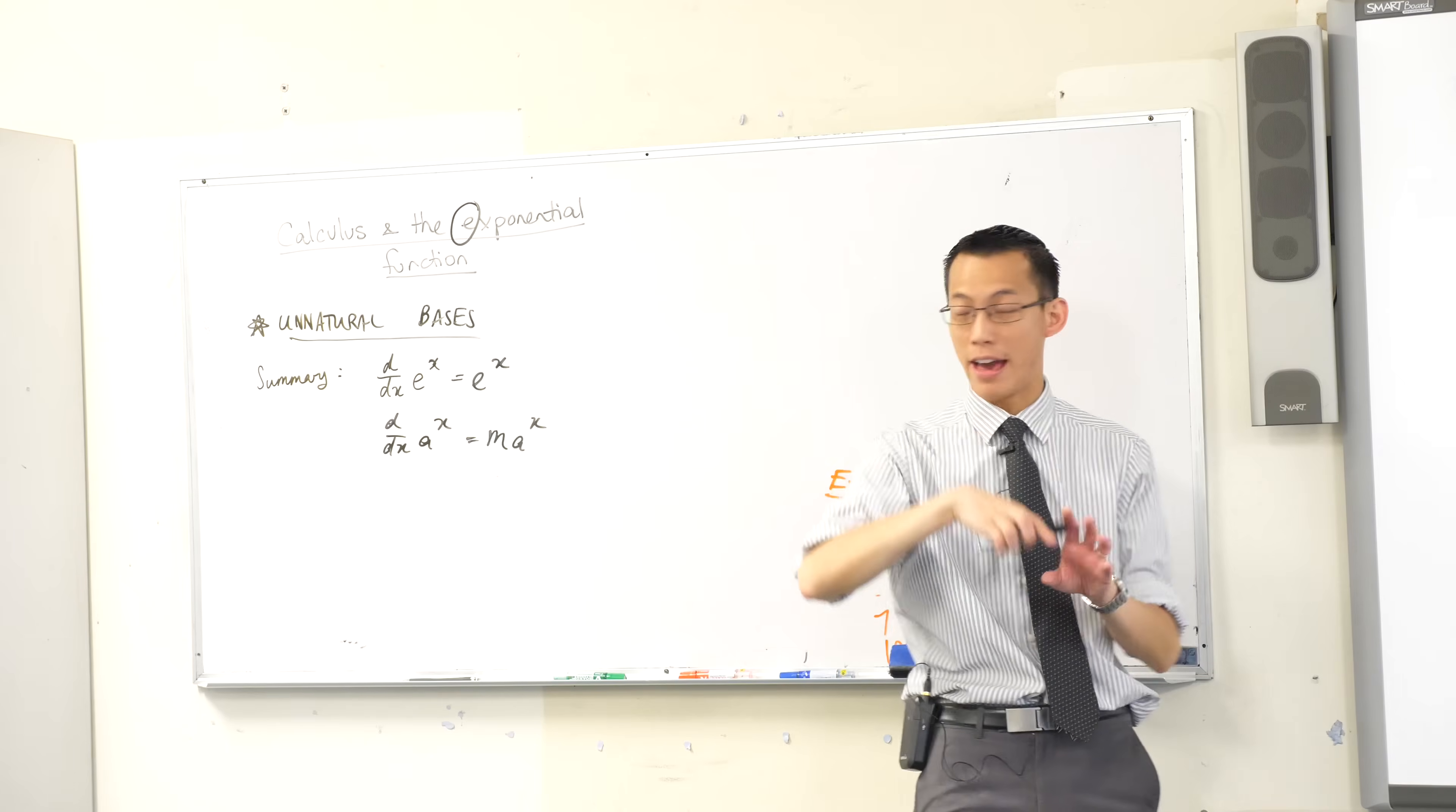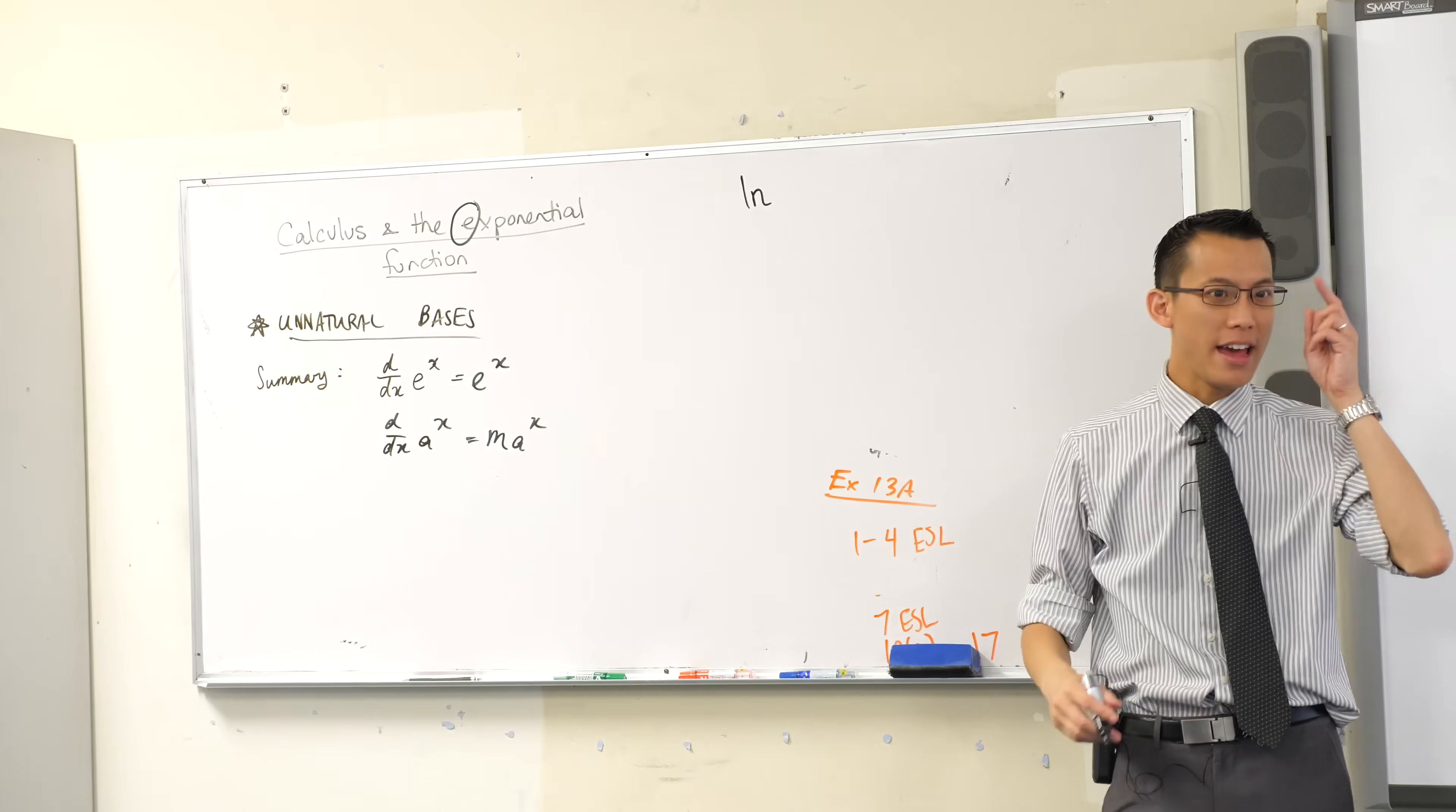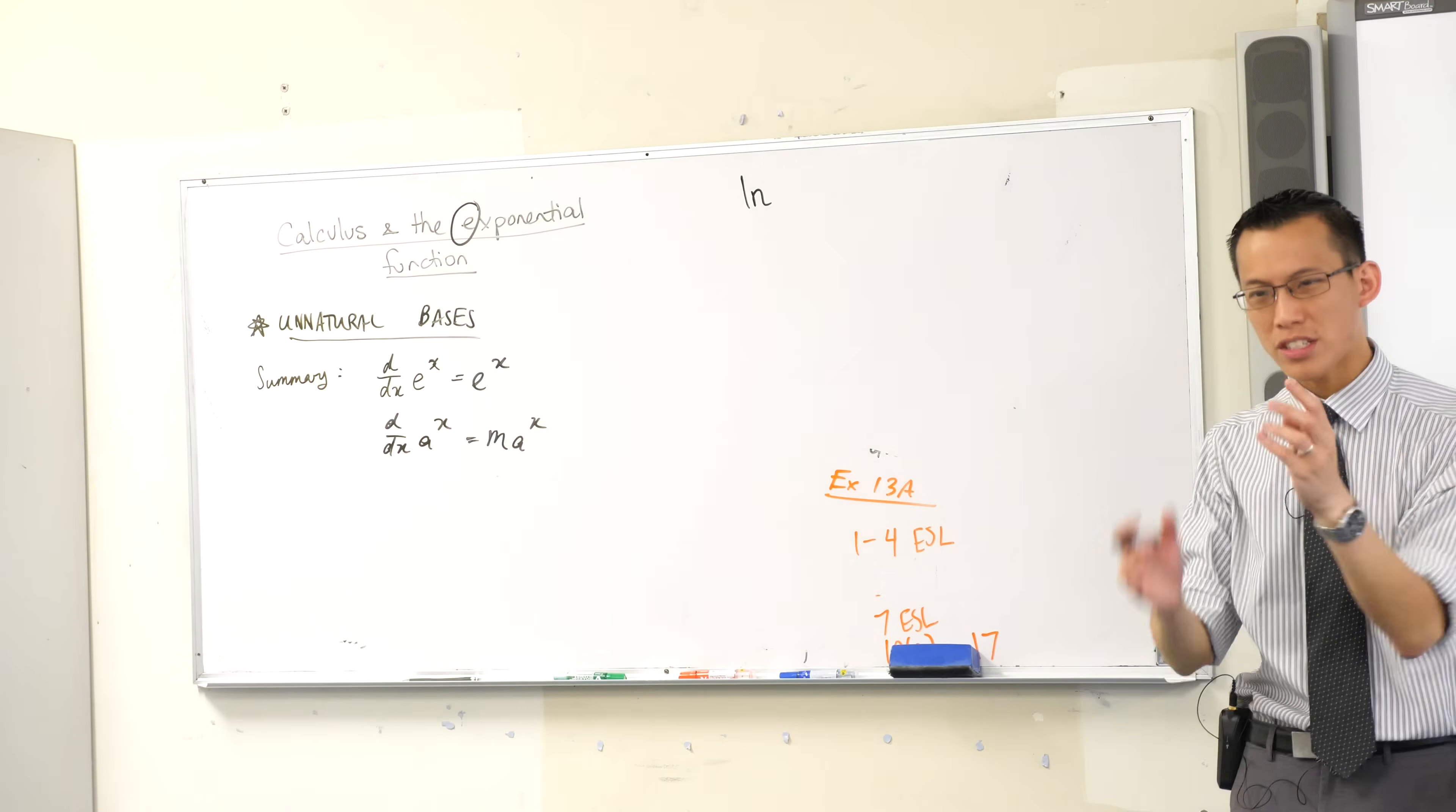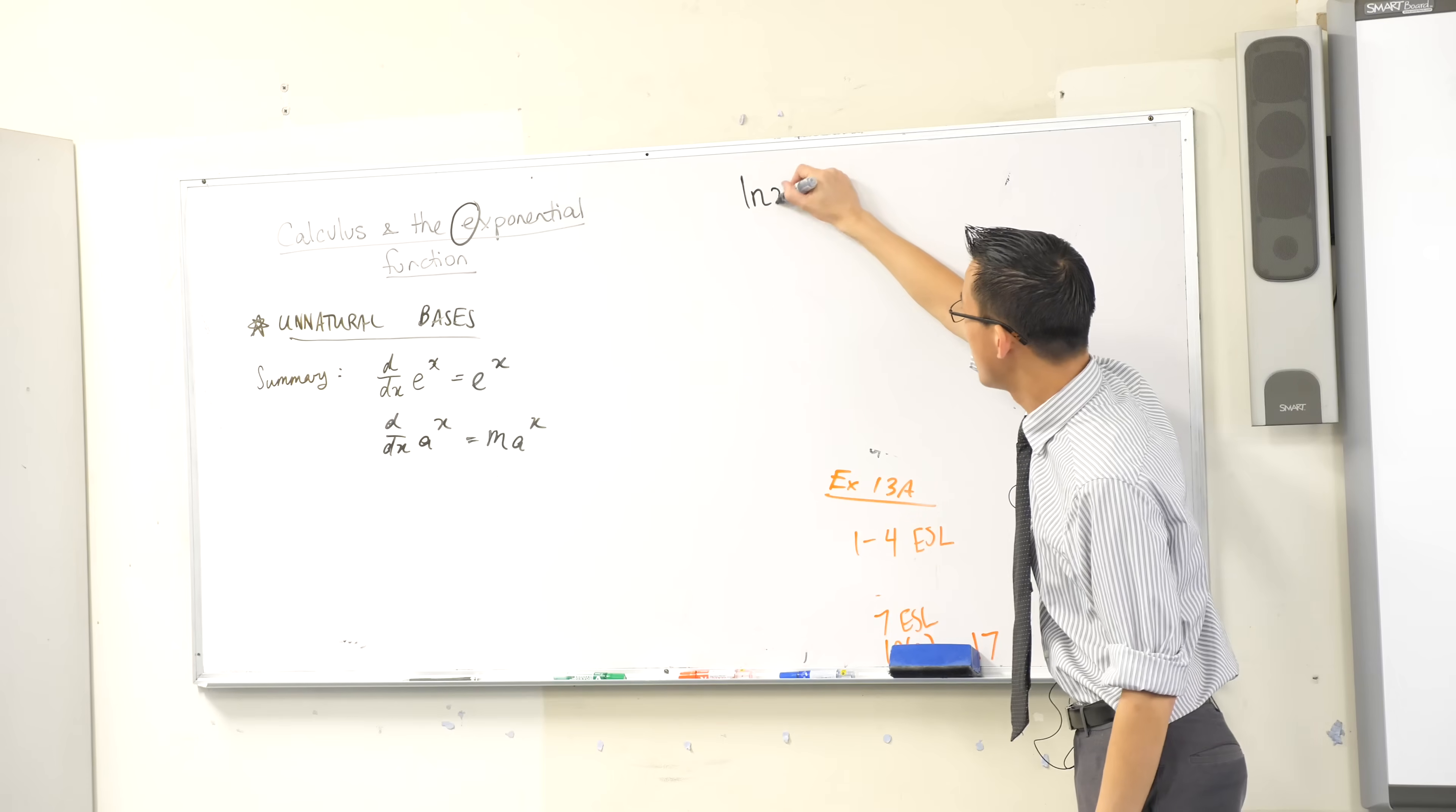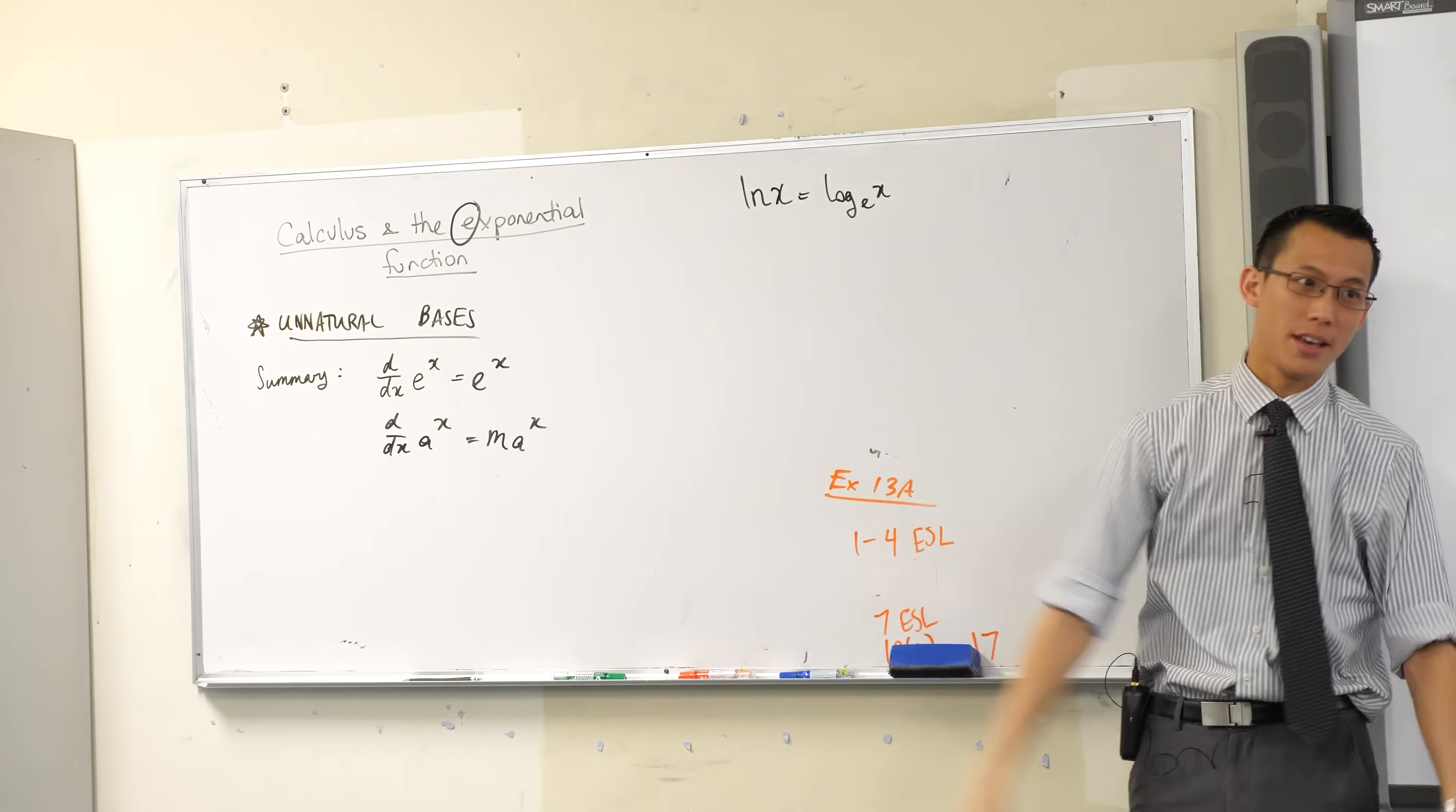It's when you have ln, right? That notation, right? It means log natural. What's the natural log? What's the natural base to choose for logs? And the answer is, well, it's a base of e.